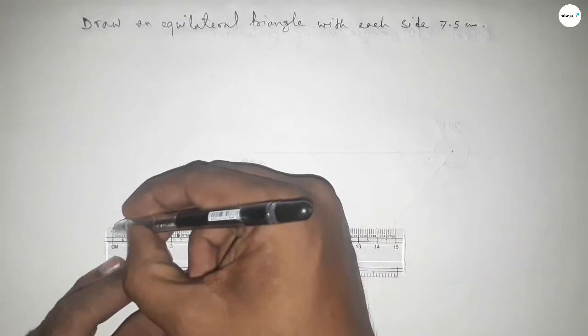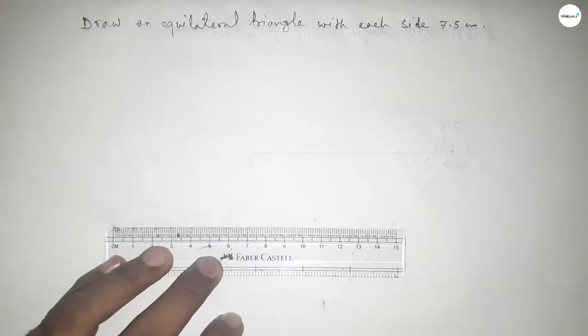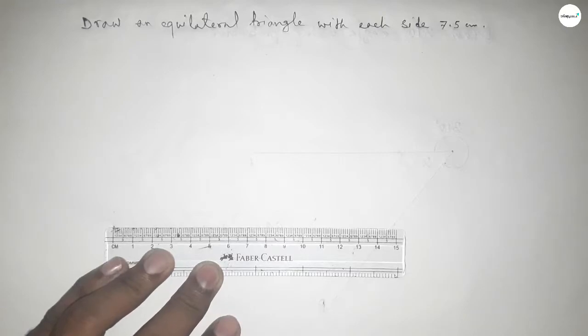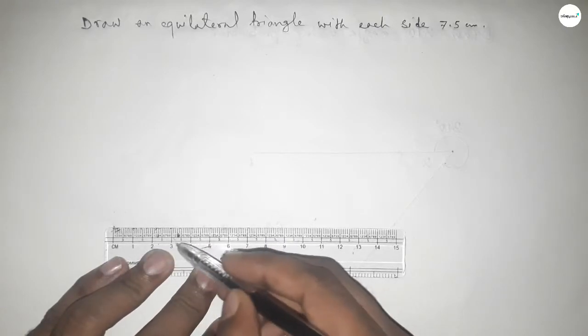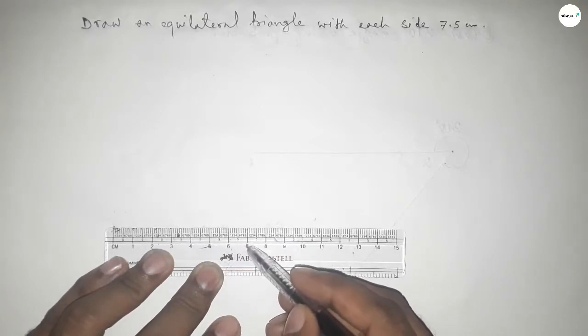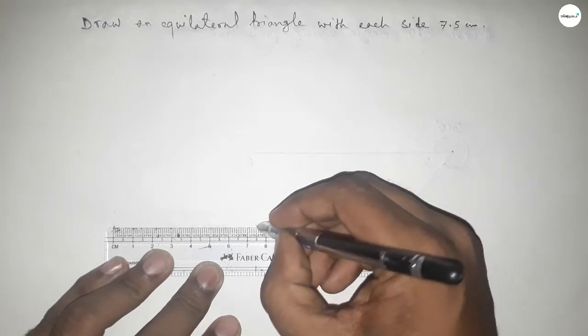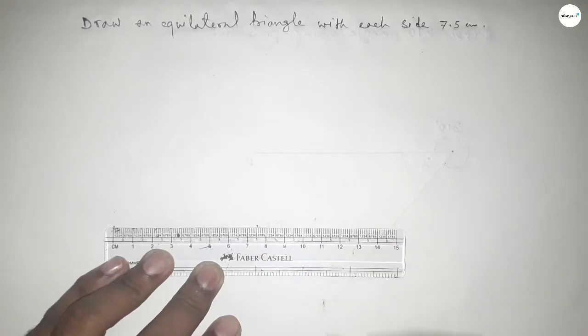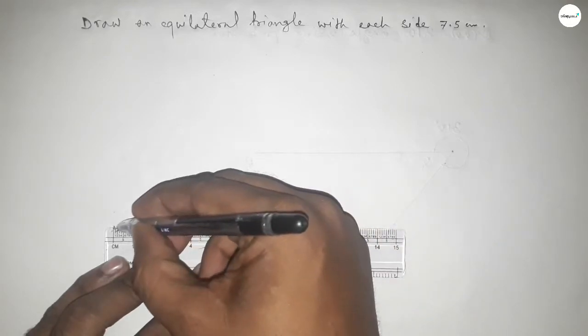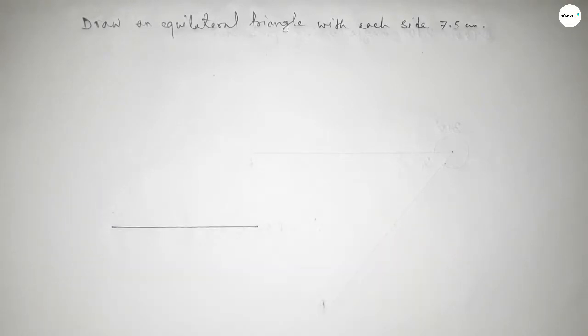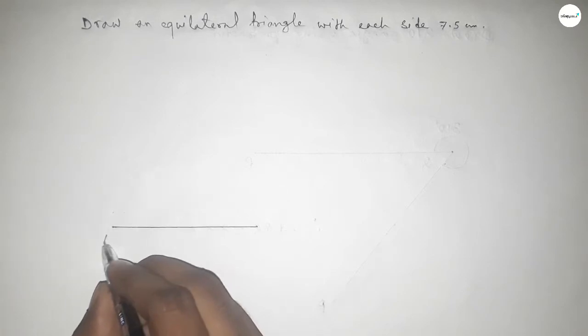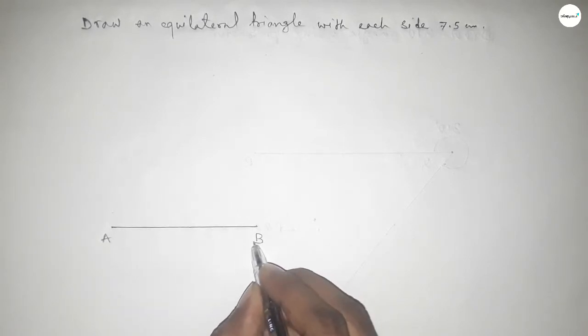So this is starting 0 and this is 1, 2, 3, 4, 5, 6, 7, and this is 7.5 centimeter. So first draw a line of length 7.5 centimeter and this is A and this is B. So line AB equal to 7.5 centimeter.